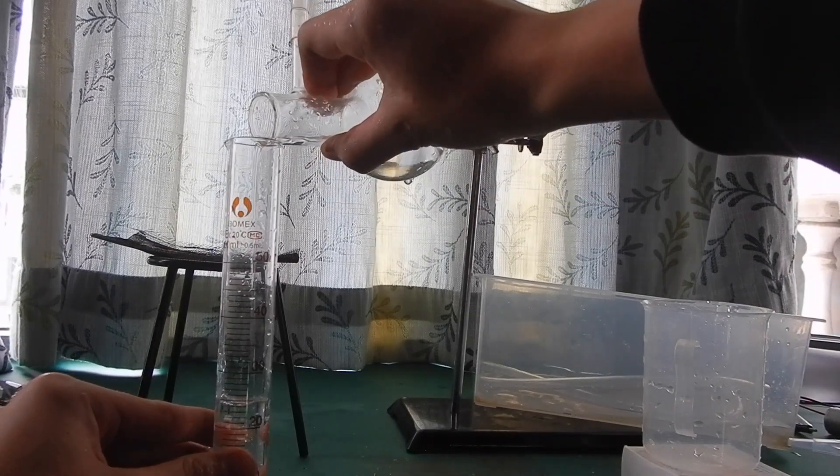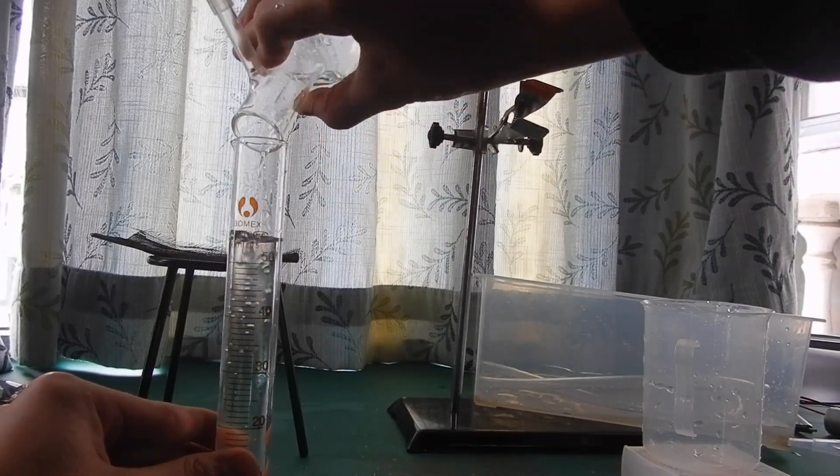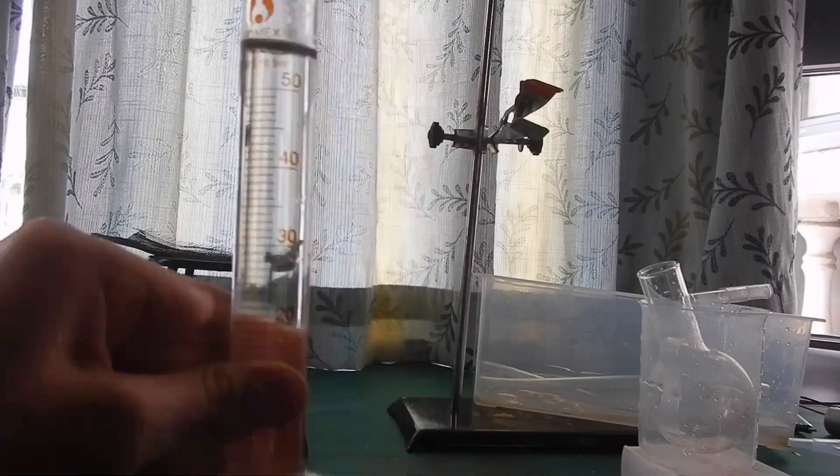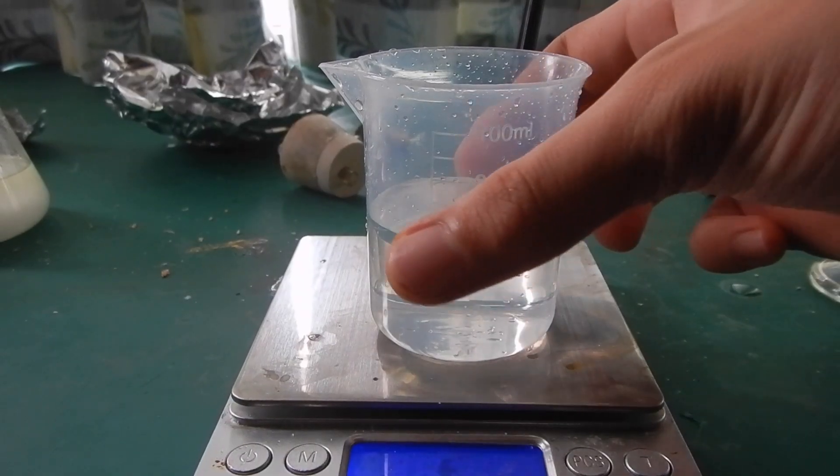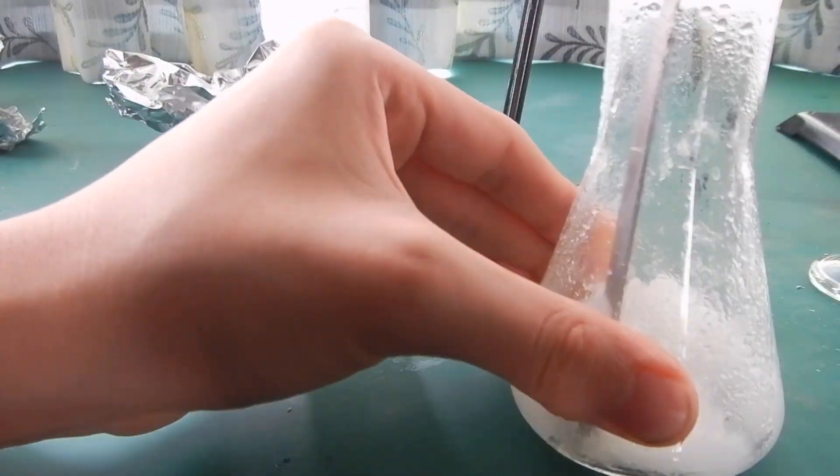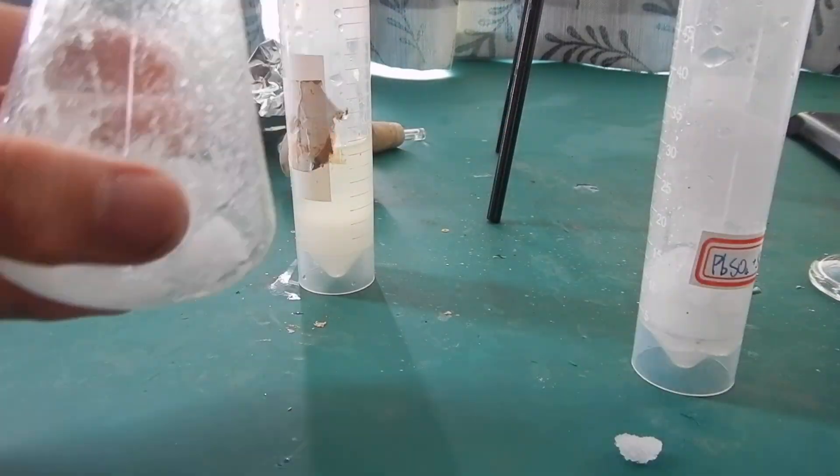I poured the distillate into a measuring cylinder, and it is about 55 milliliters. I then weighed it on the balance, and it showed 66.5 grams. I also scraped out the solid in the flask, and put it into a separate container.